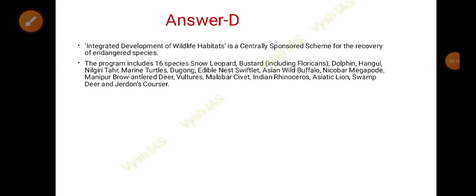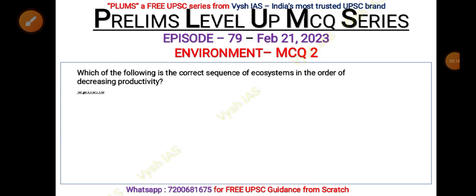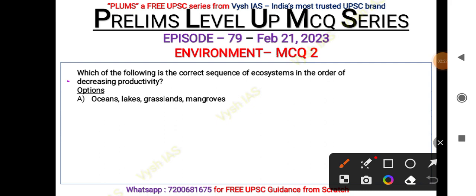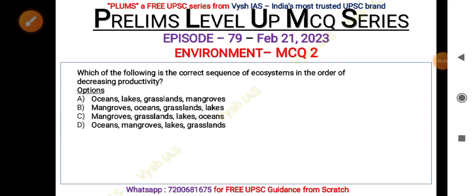The second MCQ: which of the following is the correct sequence of ecosystems in the order of decreasing productivity? Be very careful — it is decreasing productivity. Options are: A — oceans, lake, grassland, mangroves; B — mangroves, oceans, grasslands, lakes; C — mangroves, grasslands, lake, oceans; D — oceans, mangroves, lake, grasslands.